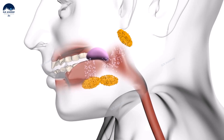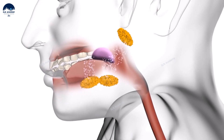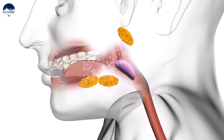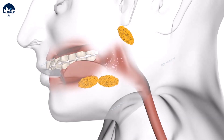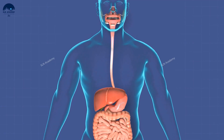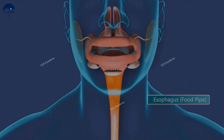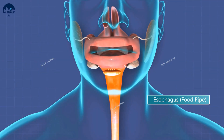The pharynx is a passageway for food and air. From the throat, food travels down a muscular tube in the chest called the esophagus. Through the esophagus, the food reaches a sac-like organ, the stomach.